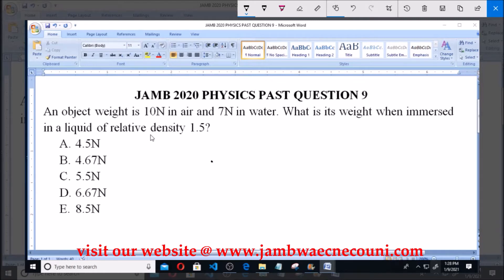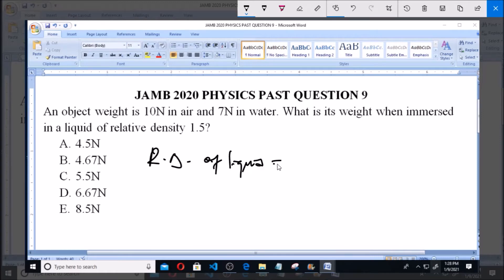Relative density, that is, its density relative to that of water, which is 1.5. Now, the relative density of this liquid is equal to the weight of the object in the liquid all over the upthrust of this object.